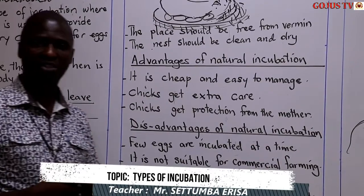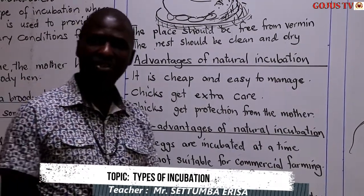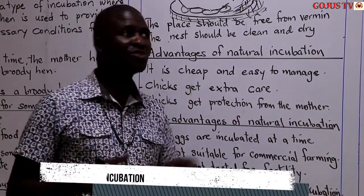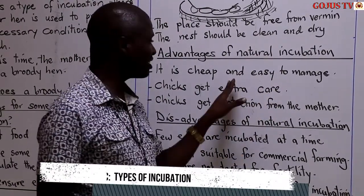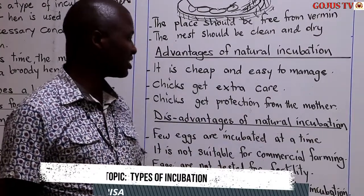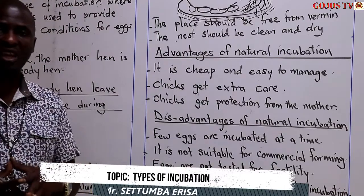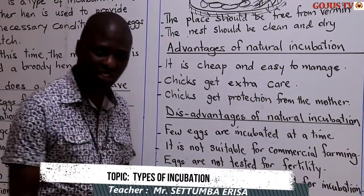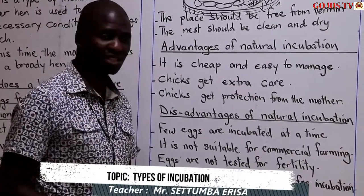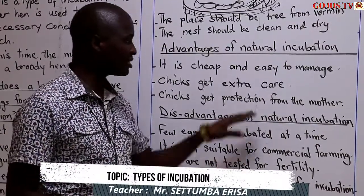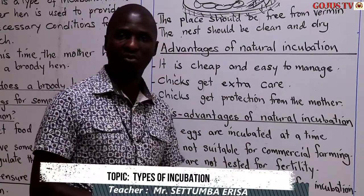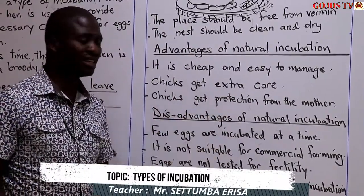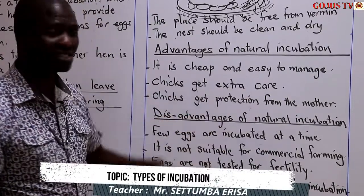Advantages of natural incubation. What are the good things about using a hen instead of a machine? Number one, it is cheap and easy to manage. You don't need to use electricity, because other incubators use electricity. Here, a hen generates its own body heat to warm the eggs. Number two, chicks get extra care. When the mother hen has finished incubating and the chicks have hatched, it continues feeding them, protecting them from predators and wild animals, and gives them warmth when the weather changes — covering them when it rains. Chicks get protection from the mother.